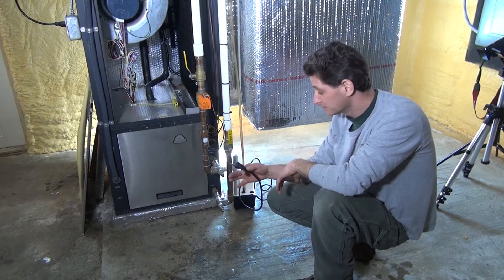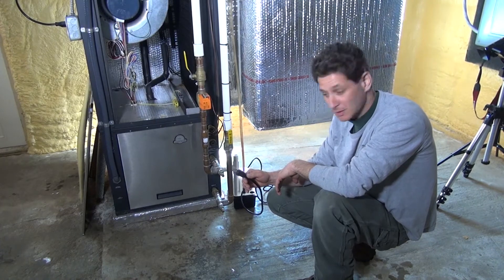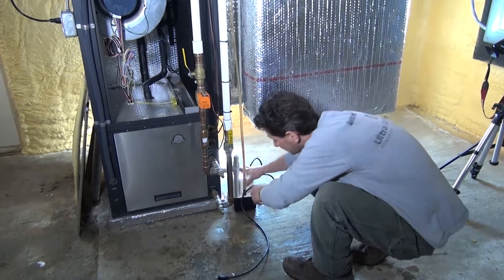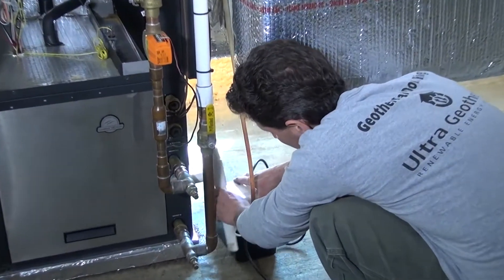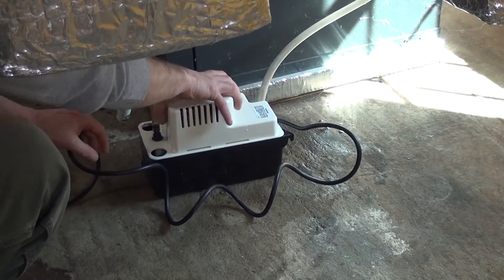Before you take apart the condensate pump, you need to unplug the plug from the receptacle so it's not powered. Then take the drain out of it and you can disconnect the discharge hose or you can leave it attached.